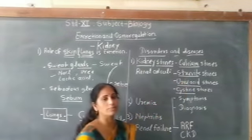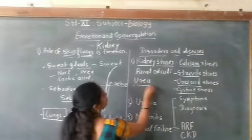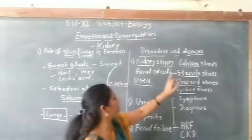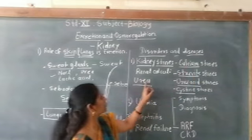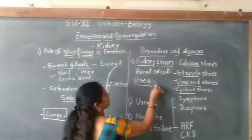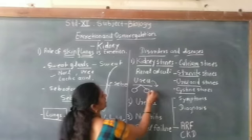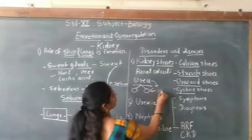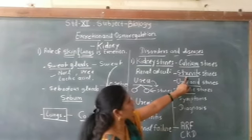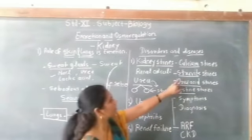Struvite stones are formed because of infection by bacteria that break down or split urea. By the splitting of urea, struvite stones are formed. An exam question may focus on this: the stones formed by bacterial infection causing urea splitting are called struvite stones.